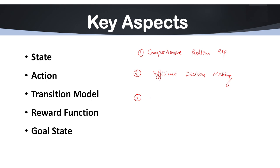Next, we have the foundation of learning and planning. In a previous lecture we discussed reinforcement learning, and state space is foundational to RL — it provides the framework for an agent to explore, evaluate, and learn the most rewarding actions in different states. That's why it is known as the foundation of learning and planning.